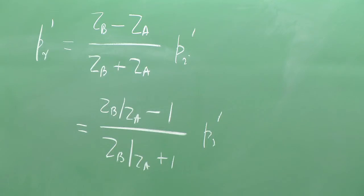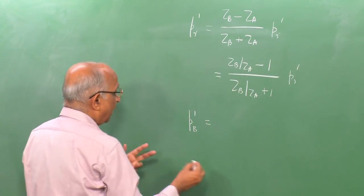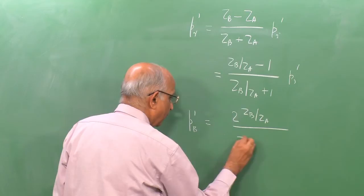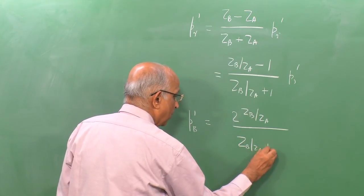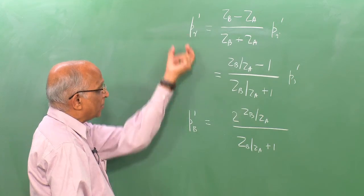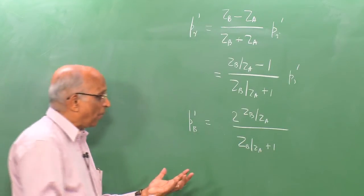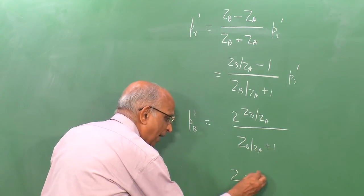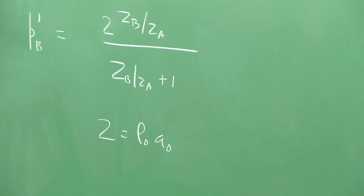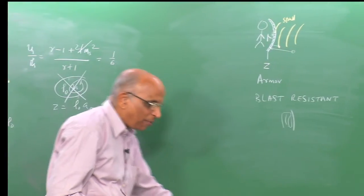Similarly, the transmitted pressure p_b = [2(Z_b/Z_a) / (Z_b/Z_a + 1)] × p_i. These expressions depend on the ratio of impedances, not their absolute values. Therefore I can still use Z = ρ₀a₀ for each medium and solve the problem for strong shocks as well.